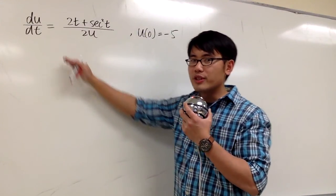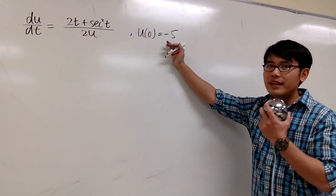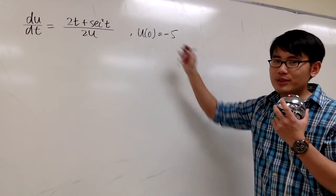We are going to solve this differential equation along with the initial condition. With this initial condition, we get to solve for the constant c for u.